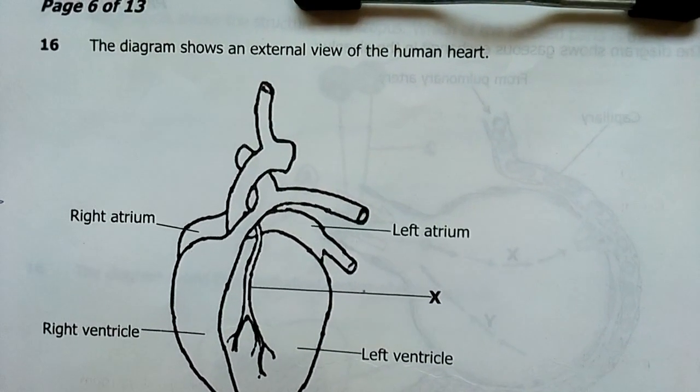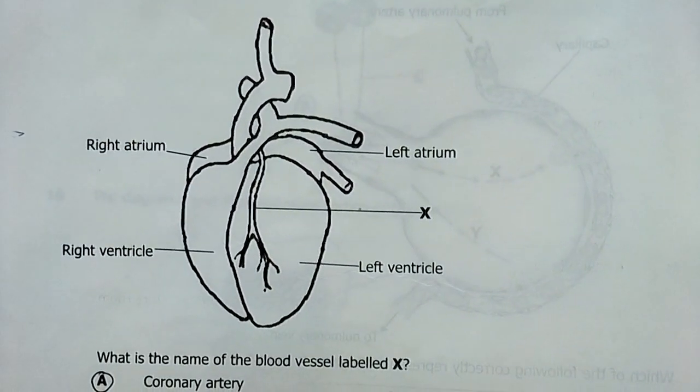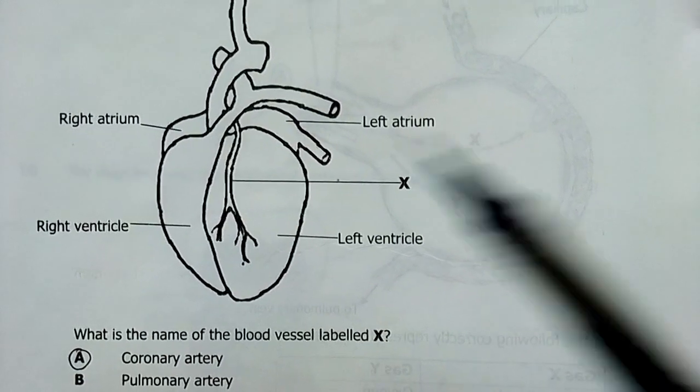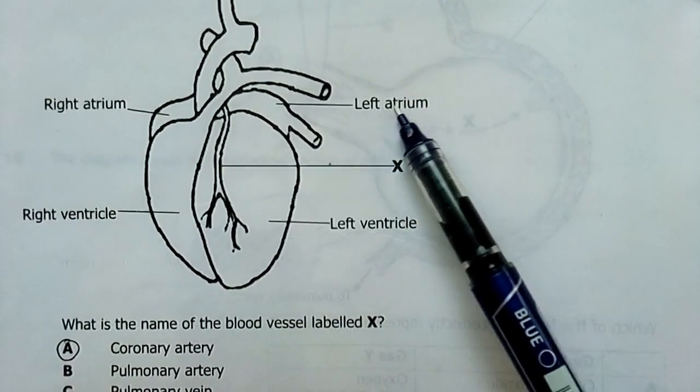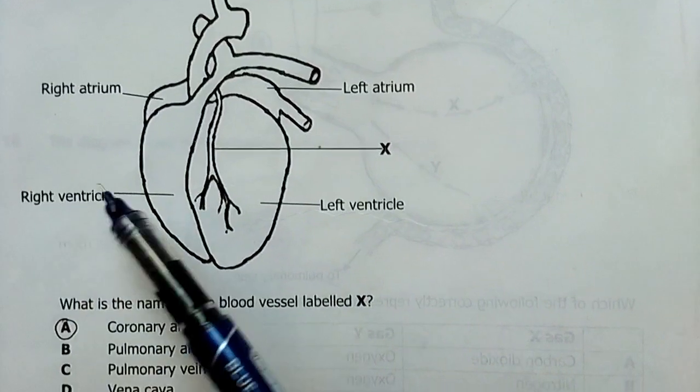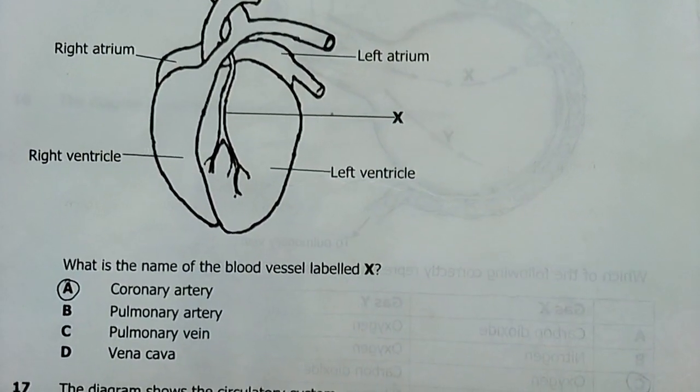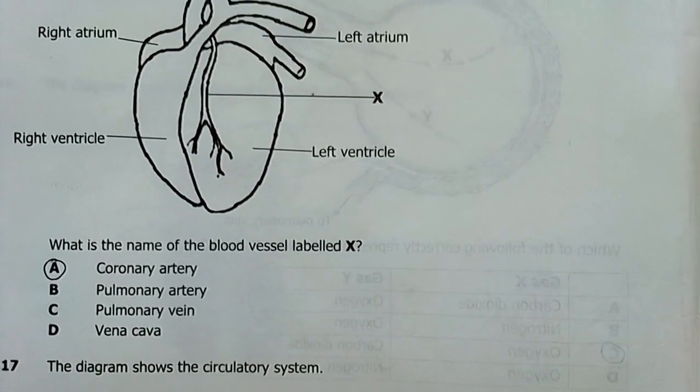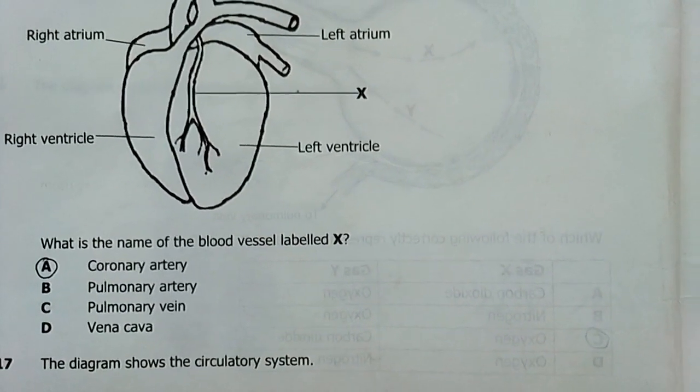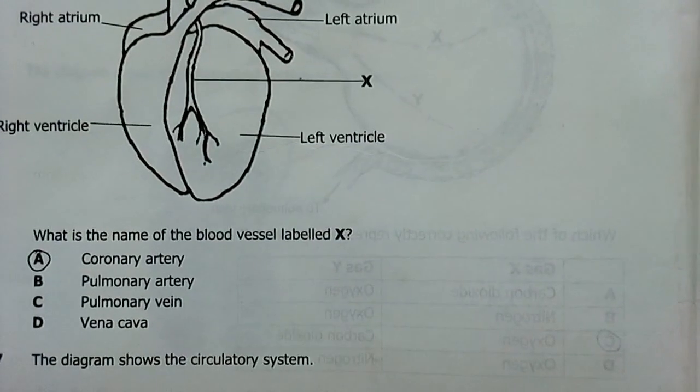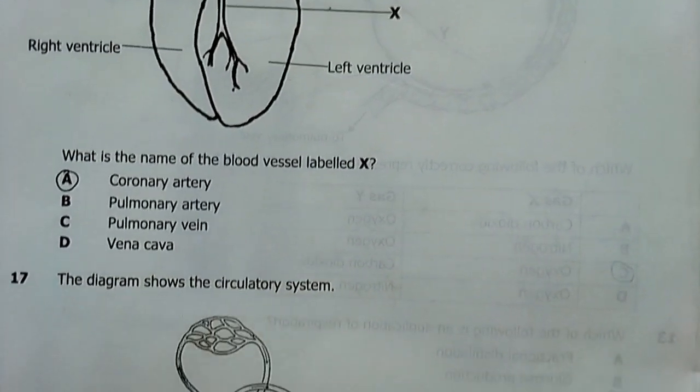The diagram shows an external view of the heart. That's our coronary artery. There are usually two of them, but only one is shown that's a left atrium. What is the name given to the blood vessel X? Coronary artery, actually. The smallest blood circulation system out of the three. You've got the coronary, the systemic, and the pulmonary circulation.